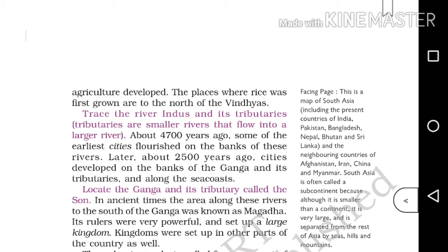We are discussing about Ganga and its tributary, the Son. The Son is one of the small rivers which flows into the Ganga. So we have learned what we mean by tributary. Now comes the development of kingdoms. Towards the south of Ganga, a large kingdom known as Magadha developed — it was a powerful and large kingdom. Several kingdoms also developed in different parts of our country.